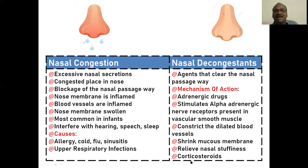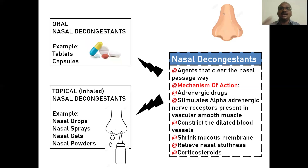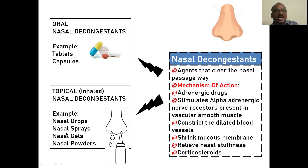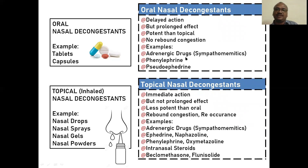This relieves nasal stuffiness. Corticosteroids can also be used but are less preferred because they reduce the immune system. Nasal decongestants are of two types: oral — tablets, capsules, pills — called oral nasal decongestants; and topical, meaning applied locally to the nose only — such as inhalations, nasal drops, nasal sprays, nasal gels, nasal powders — called topical or inhaled nasal decongestants.